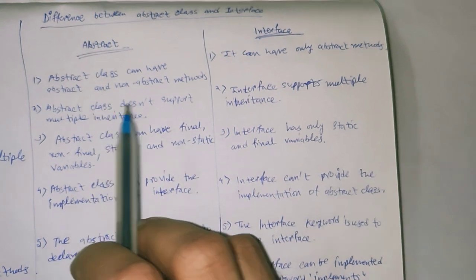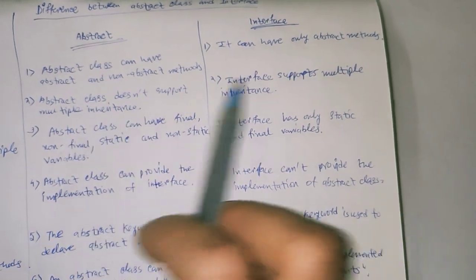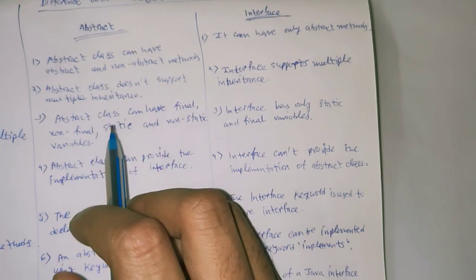Abstract class does not support multiple inheritance. Interface supports multiple inheritance.